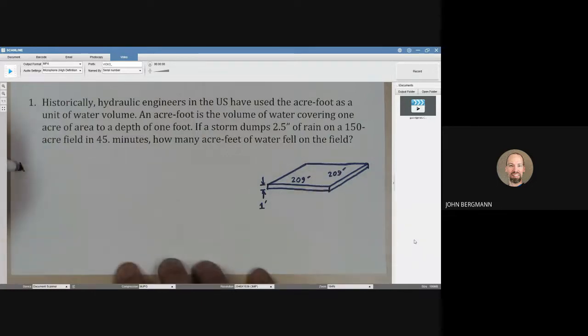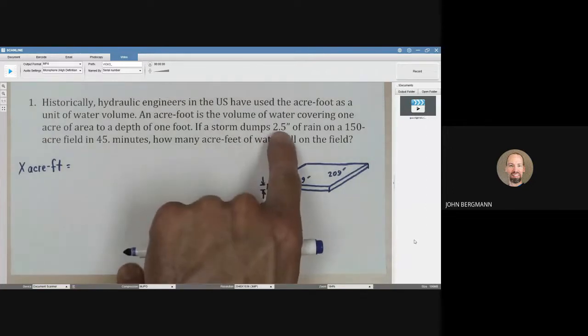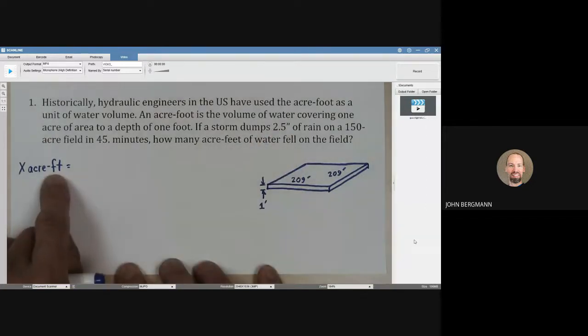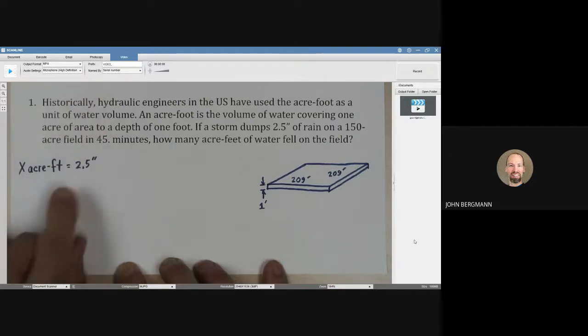You know what? I don't know. Let's just start here. X acre feet. Well, what are we given? We're given two and a half inches. Now, two and a half inches is a unit of length, just like feet is. And feet needs to be in the numerator of our answer. So I think two and a half inches looks good. And you know what? Let's convert that into feet right now.